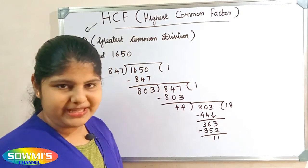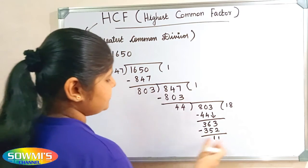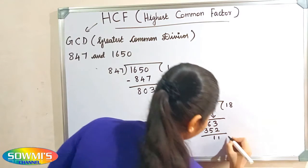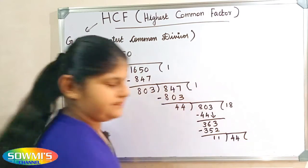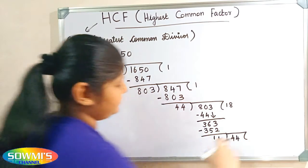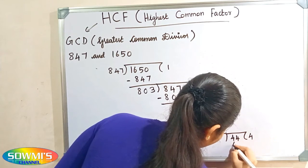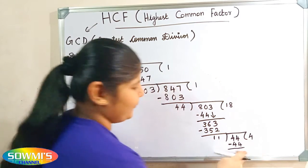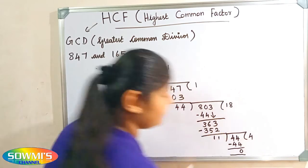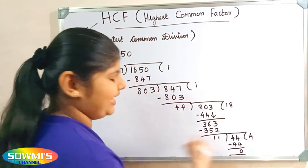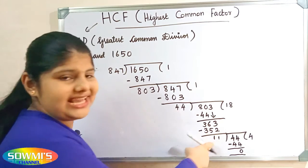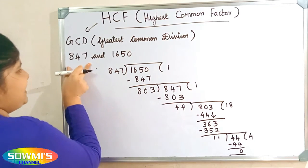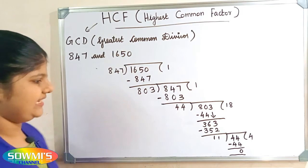Now we have to repeat the process until our remainder is 0. We make 11 the new divisor and 44 the new dividend. Now we divide: 44 minus 44 will be 0. We end the process here because our remainder is 0. The last divisor will be the HCF. Here the last divisor is 11, so the HCF of 847 and 1650 is 11.